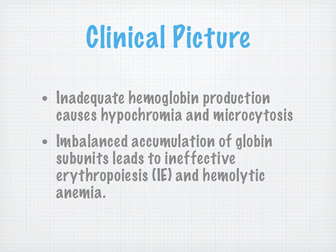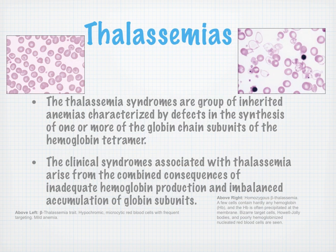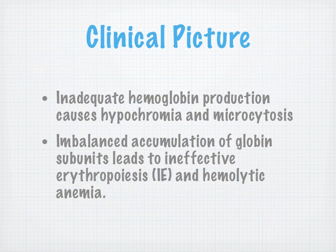So what's the clinical picture? Inadequate hemoglobin production causes hypochromia and microcytosis. Imbalanced accumulation of globin subunits then leads to ineffective erythropoiesis and hemolytic anemia — destruction of those red blood cells.